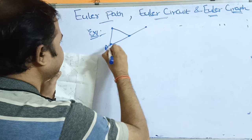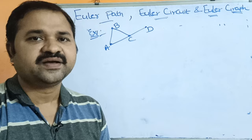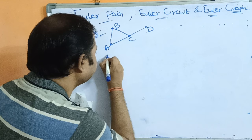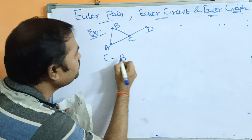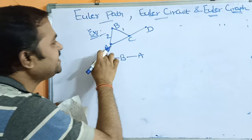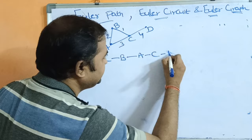Here we have four vertices: A, B, C, and D. Let us check whether this graph has Euler path or not. This is the trial and error method. Let us start from C. Visit C to B — this edge is visited. Next, B to A — this edge is visited. Next, A to C — this edge is visited. Next, C to D — this edge is also visited.